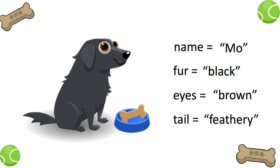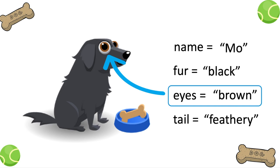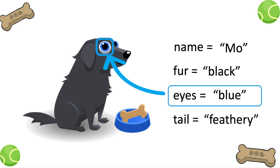Now let's say you decide you want Mo the game dog to have different color eyes. First, find the eyes variable in the code. You can edit the value it stores by deleting it and typing something new, like blue or green.